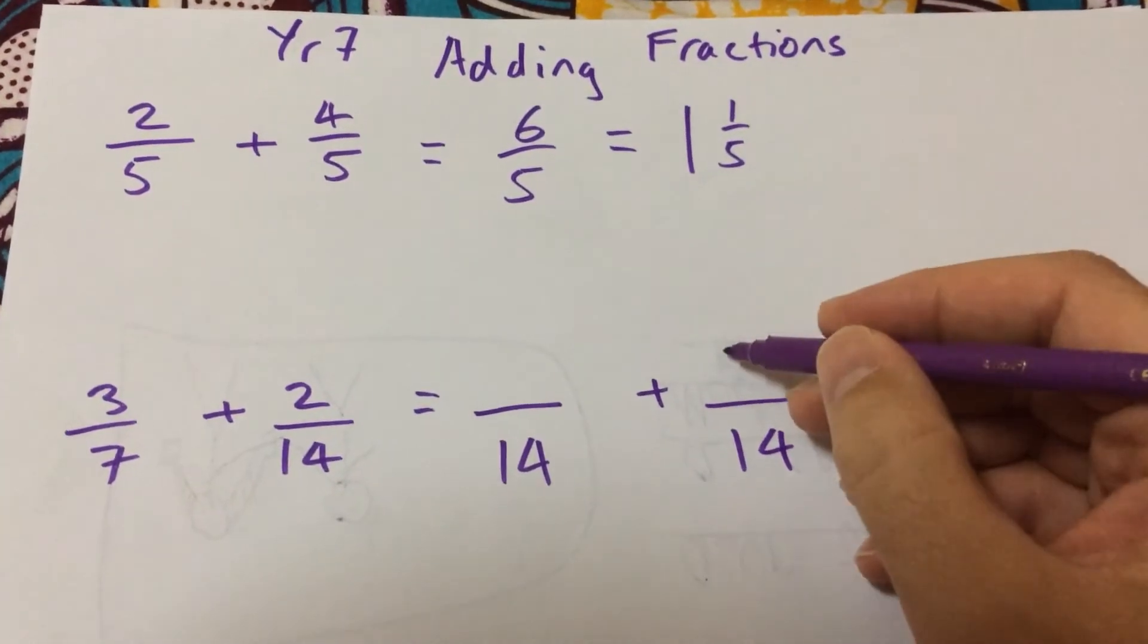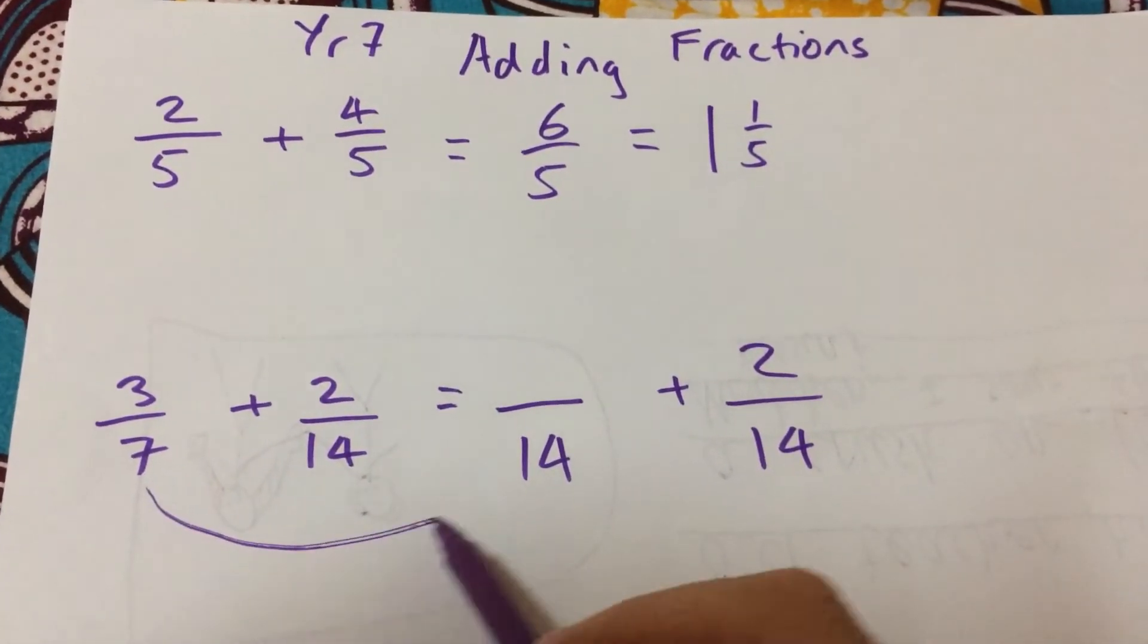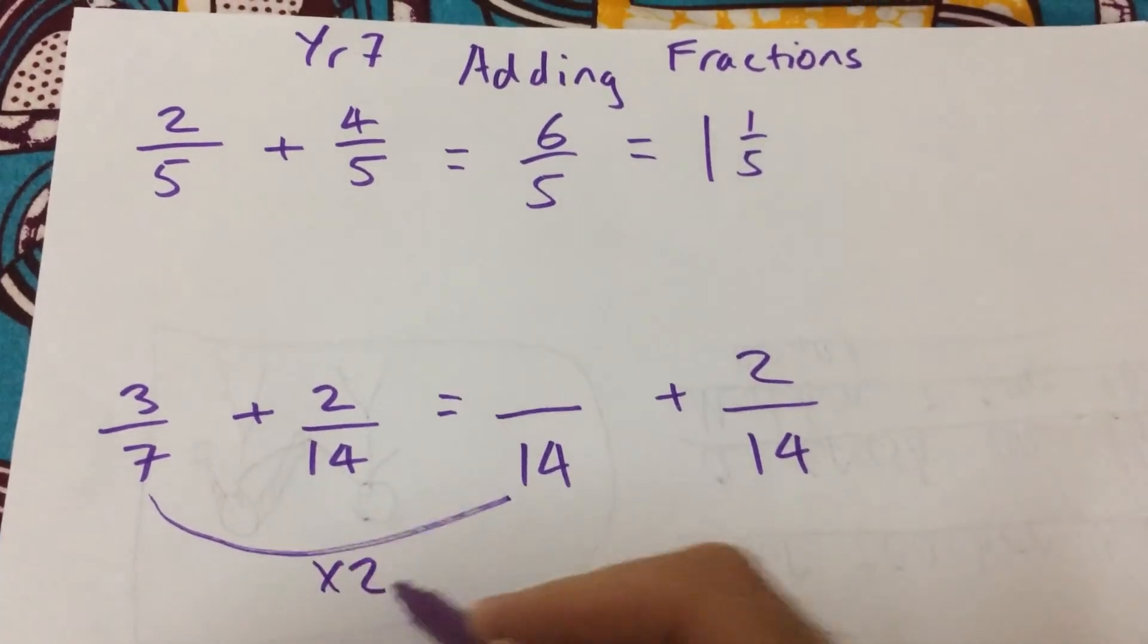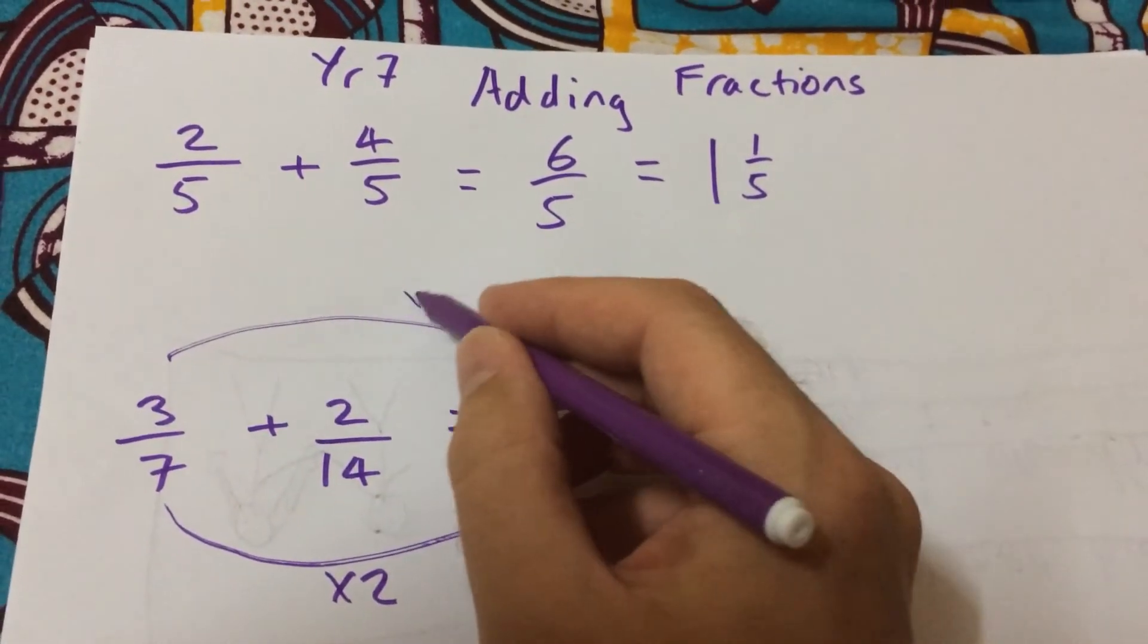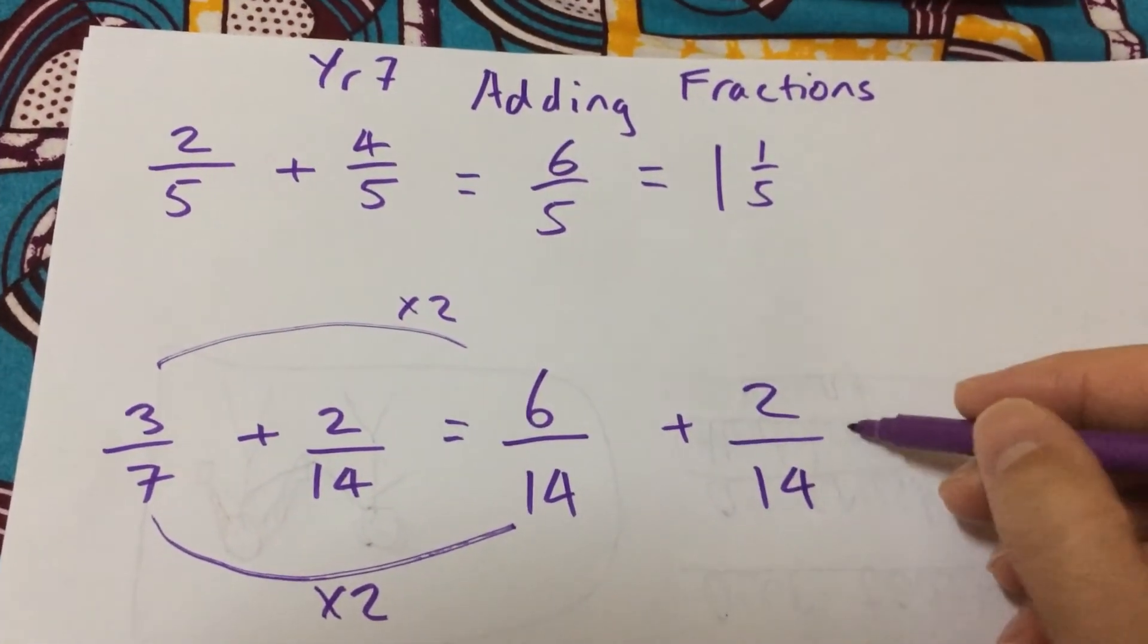So I don't change that second term. But what have I done to that seven to make it fourteen? We'll have times it by two. So I must times that numerator by two. Three times two is six. So I've got six fourteenths plus two fourteenths.